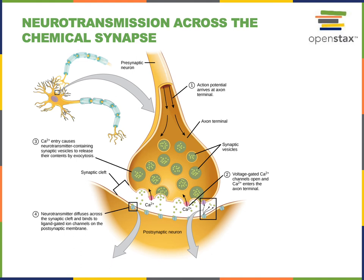When the action potential reaches the axon terminal, voltage-gated calcium ion channels are stimulated to open. Then calcium will rush from the extracellular fluid into the cytosol. Calcium will then bind to calcium sensor proteins that will stimulate synaptic vesicles to merge with the plasma membrane at the axon terminal.